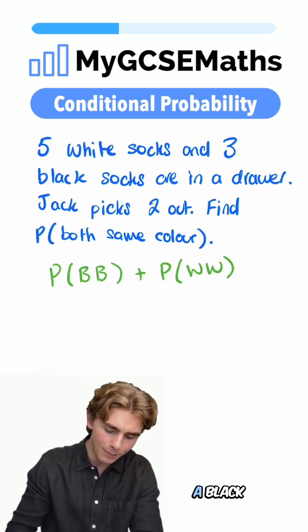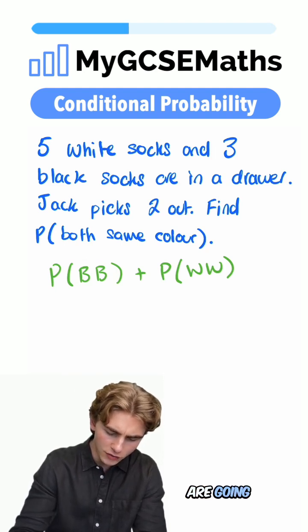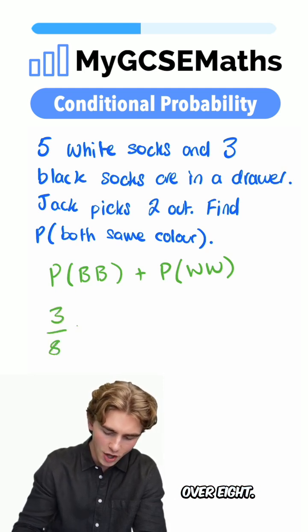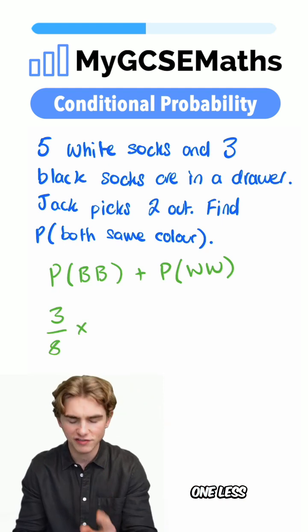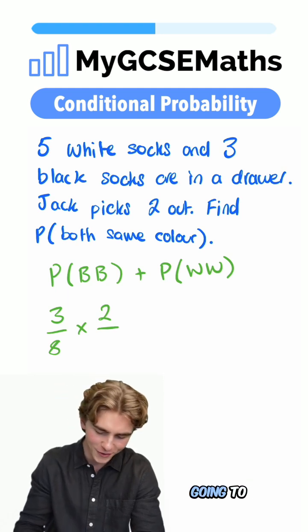What's the probability of getting a black sock and then a black sock? Well, on our first pick, there are three black socks out of eight socks in total, so we have a probability of 3/8. On our second pick, there's one less black sock, so now there are two, and one less sock in total, so there are seven.